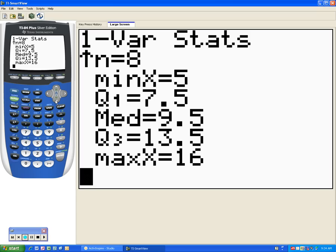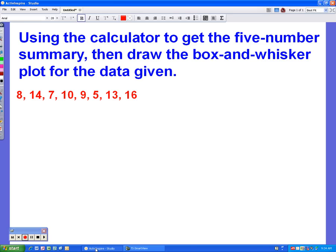Okay, so the next thing we want to do, we want to go ahead and make the graph for the five number summary. We have the numbers, now we just need to make the graph. So what we want to do, first of all, is make a number line.